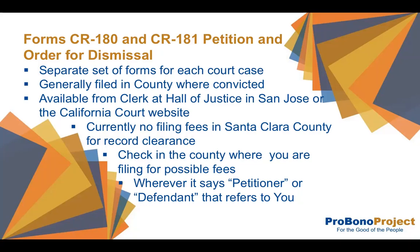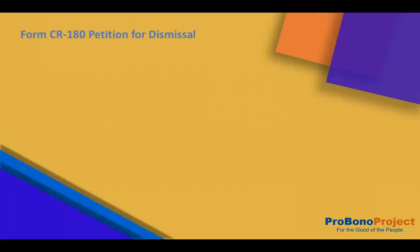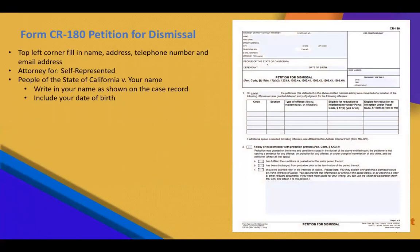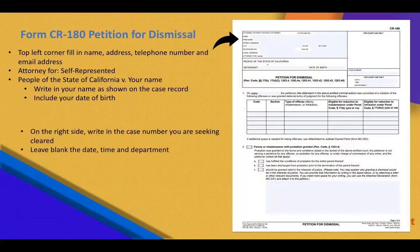When filling out these forms, please be aware that you are both the petitioner and the defendant, so wherever those terms are used, it refers to you. For Form CR180, Petition for Dismissal: on the top left corner, write in your name, address, telephone number, and email address. Where it asks attorney for, write in self-represented. Where it states the people of the state of California versus, write in your name as shown on your case record and also your date of birth. Write in your case number for the case you are seeking to have cleared, such as CC 123456.